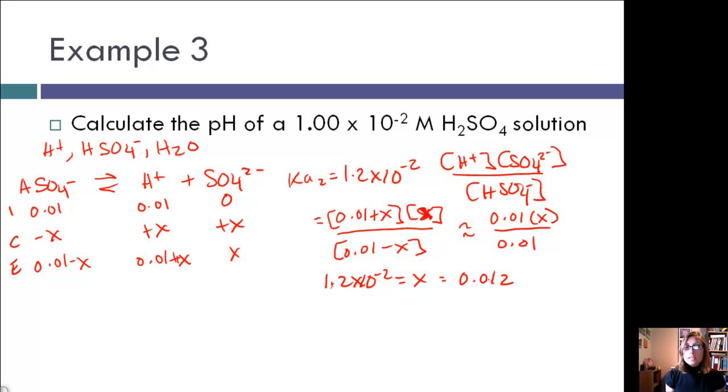Now, here's our problem. This is greater than what we said was our initial concentration of 0.01. That's not going to work. So we need to use the quadratic formula instead.